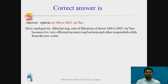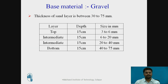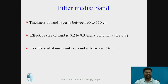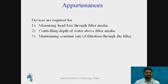The last component is appurtenances. Appurtenances are devices required to measure head loss through the filter media, maintain the water level above the filter media, and maintain the rate of filtration. These are the components studied: filter media, base material, drainage system, and appurtenances — all devices required for maintenance of the filter.